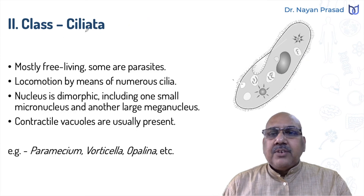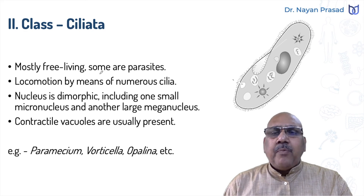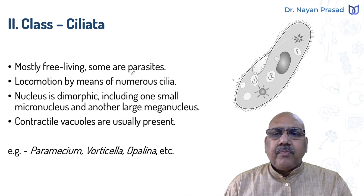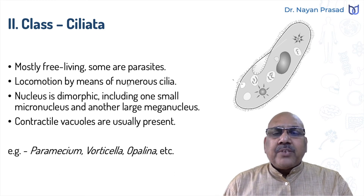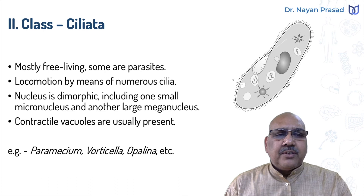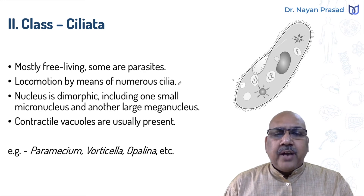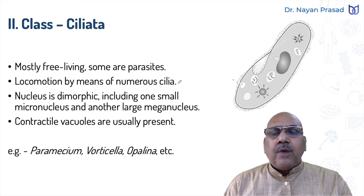Another class is class Ciliata — the name indicates cilia found in them. The members of this group are mostly free-living, however some are parasites also. In them, locomotion takes place by means of numerous small hair-like cilia. When we see the diagram closely, we see several small hair-like structures. These help in locomotion and also in collecting food materials. So presence of cilia is one of the most important features of ciliates.